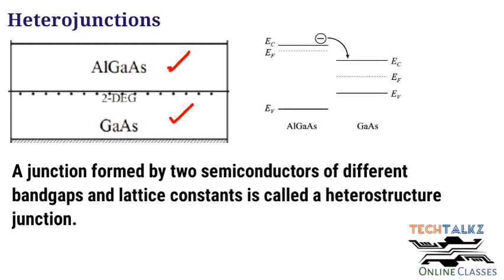If we compare, aluminium gallium arsenide (AlGaAs) is a wide bandgap semiconductor and gallium arsenide (GaAs) is a narrow bandgap semiconductor. By adjusting the percentage of aluminium and gallium, we can adjust the bandgap of aluminium gallium arsenide, or AlGaAs in short.